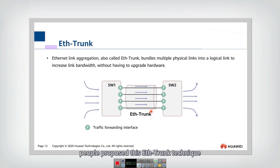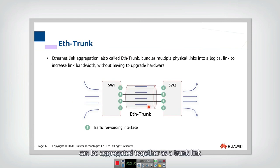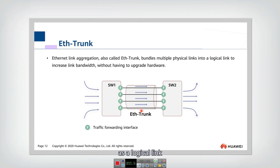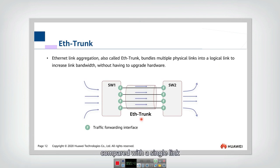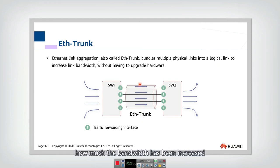To solve this problem, people proposed the EtherTrunk technique. We want all these links to be aggregated together as a trunk link. You can think of this trunk link as a logical link, and this logical link will have n times the bandwidth compared with a single link.